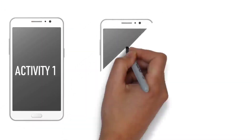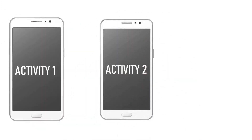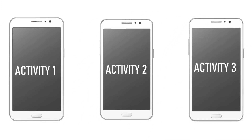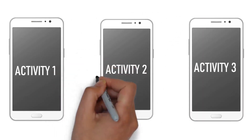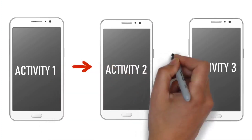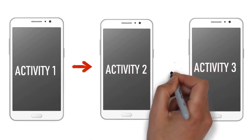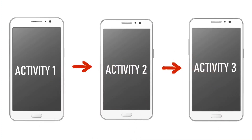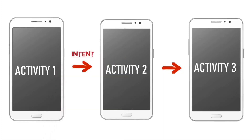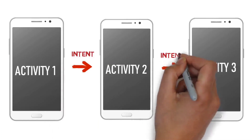Let's consider an application. There are activity 1, activity 2, and activity 3. Activity 1 and activity 2 will be connected. If you click on the activity, you will navigate to the next activity. This connecting object is called intent.